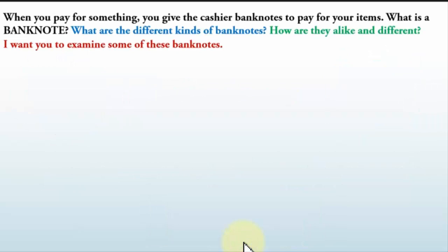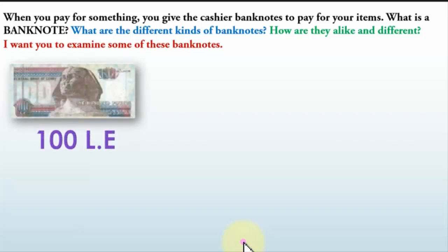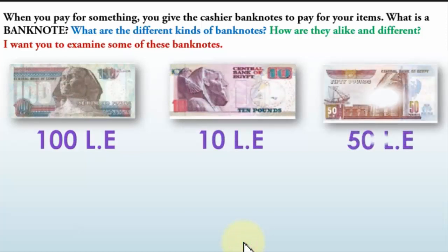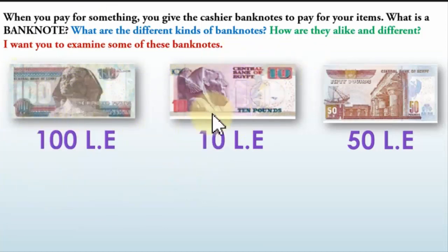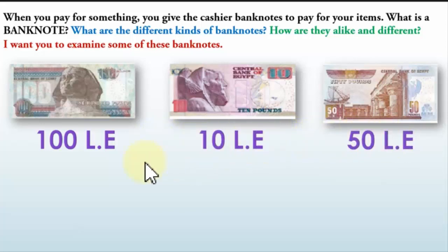When you pay for something, you give the cashier banknotes to pay for your items. What are the different kinds of banknotes? We have 100 pound Egyptian banknotes, 10 pound Egyptian banknotes, and 50 pound Egyptian banknotes. So: 50 LE, 10 LE, 100 LE — we say 100 pounds, 10 pounds, 50 pounds.